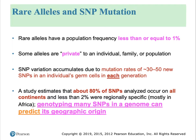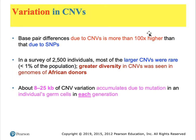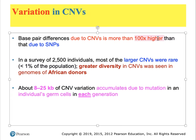Thus, companies like Ancestry.com, if they sequence enough of your genome, are able to predict with some degree of certainty what your geographical origin may have been. Another class of polymorphism is copy number variants (CNVs). These regions tend to be more subject to mutation than single nucleotide polymorphisms. In a survey of two and a half thousand people, most of the larger CNVs were rare — present in less than one percent of the population. Greater diversity in CNVs was seen in genomes of African donors, again supporting that the greatest diversity is found in the African subcontinent.